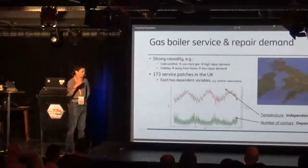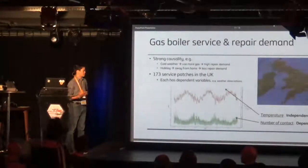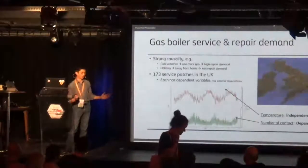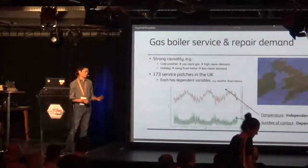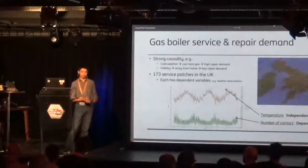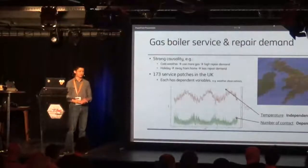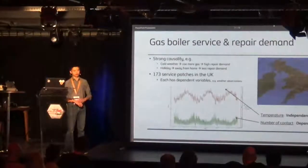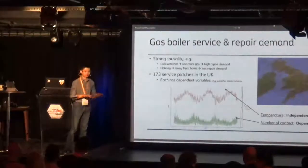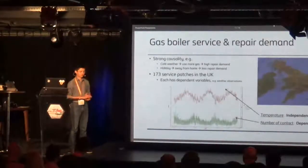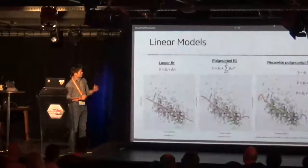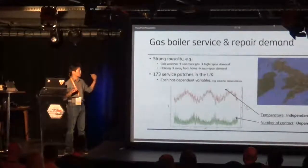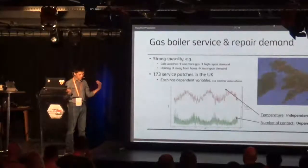There are other correlated factors — for example, holiday or weekday. Although a boiler can break down on any given day, people tend to attend to these things on working days. We see a strong spike on Monday, Tuesday, and so on, but much lower demand over weekends because people don't tend to address these issues then. In this forecasting process, we look at patch-level forecasts — across the whole country we've got 173 patches, and we model at the patch level.